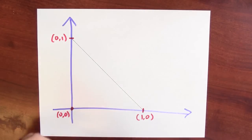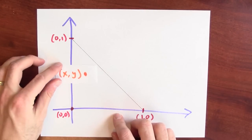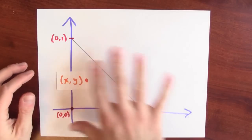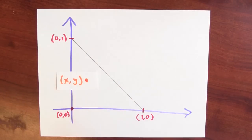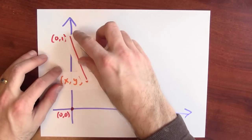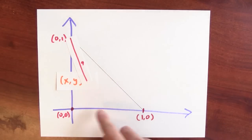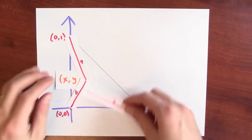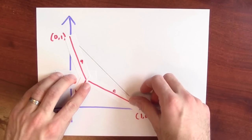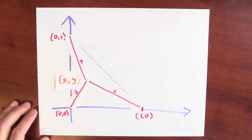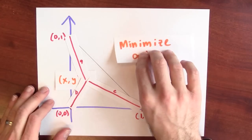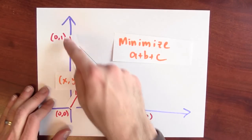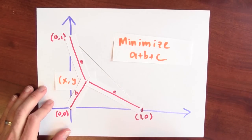What am I trying to do? I'm trying to find a point — I'll call it (x,y) — in the middle of this triangle, so that the length A from (x,y) to (0,1), the length B from (x,y) to the origin, and the length C from (x,y) to the point (1,0) — I want A plus B plus C to be as small as possible. I'm trying to minimize the sum of the lengths to the vertices.